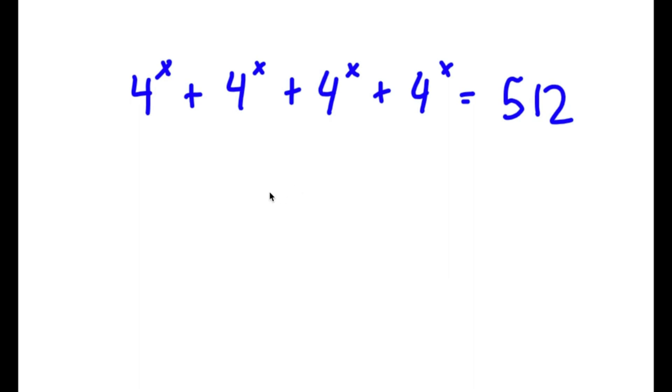So in this problem, I have 4 to the power of x plus 4 to the power of x plus 4 to the power of x plus 4 to the power of x is equal to 512.